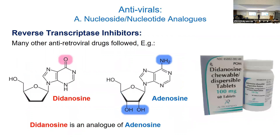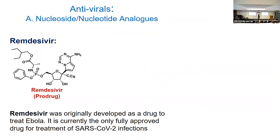Here's another one — didanosine — a newer drug that apparently has fewer side effects. AZT was actually really difficult to use initially because you had to take it on an empty stomach at very precise times to get the right blood concentration, which is really hard to get patients to do. A lot of these newer drugs are a little better in that regard. Didanosine looks like adenosine — same idea: binds the viral enzyme efficiently and not our human polymerases efficiently.